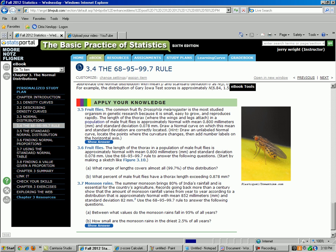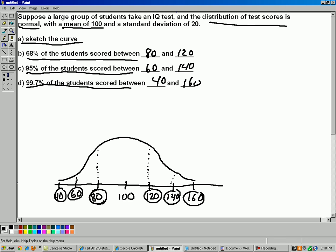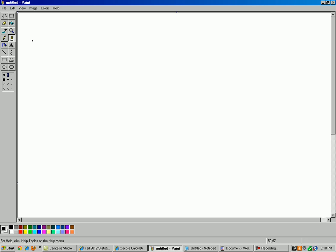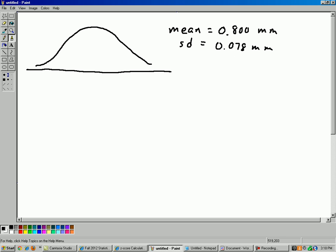Let's start with making a sketch. Pretty much every question related to the normal curve, the first thing you have to do, whether it tells you to or not, is to make a sketch. So here's our normal curve. The mean is 0.800 millimeters. That's the mean length of a thorax. And the standard deviation is 0.078 millimeters.